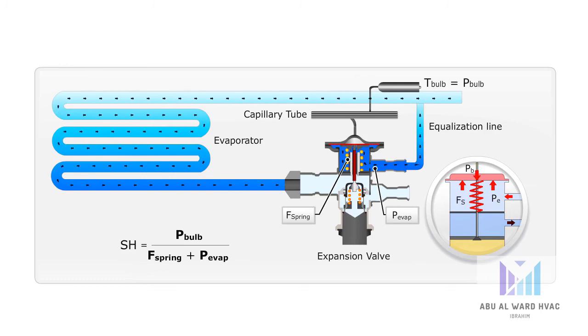If the load on the evaporator decreases, the decreasing superheat will in turn decrease the bulb temperature or pressure. This will close the TXV orifice so less refrigerant is injected.